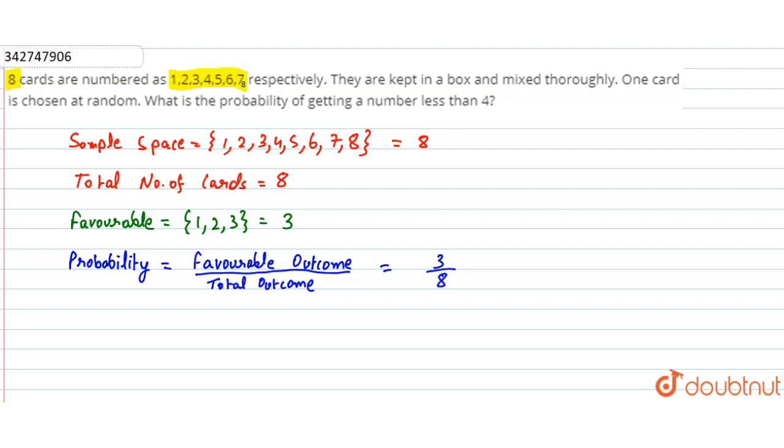Therefore, probability of getting a number less than 4 is equal to 3 divided by 8. This is our answer, thank you.